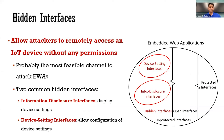The hidden interfaces allow attackers to remotely access an IoT device without any permissions — it is probably the most feasible way to attack embedded web applications. From statistics of CVE, we found that there are two types of hidden interfaces that are very common. The first type is the information disclosure interface.